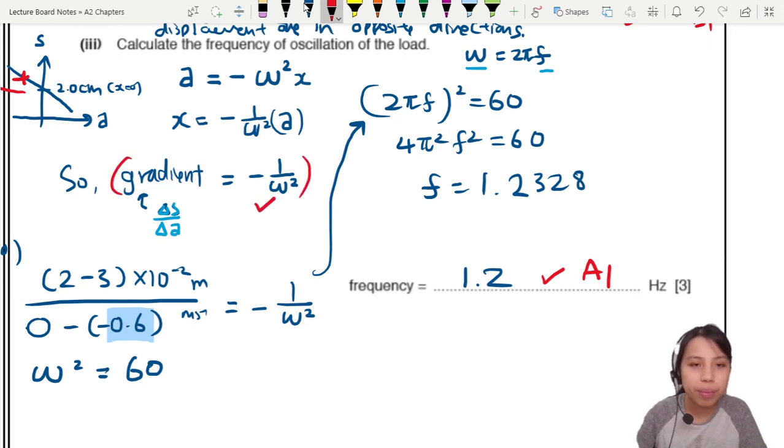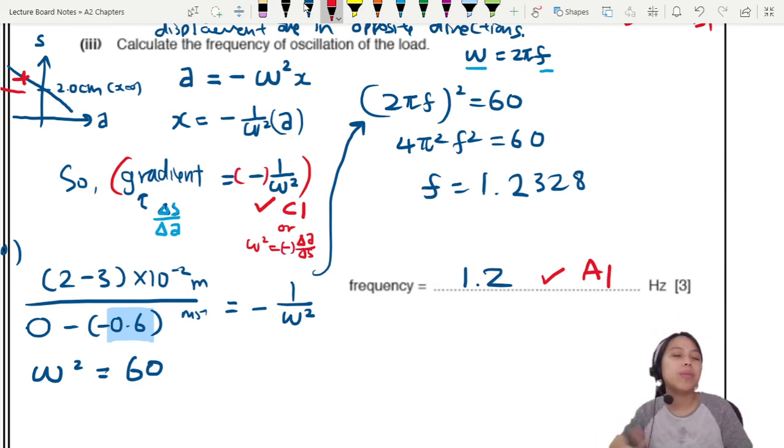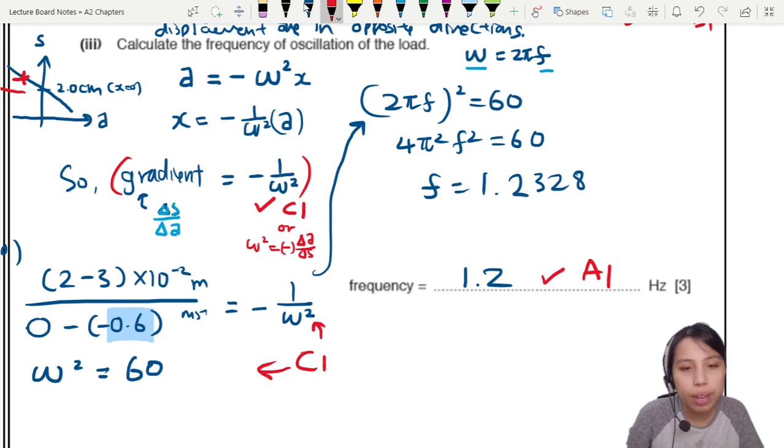1 mark comes from if you knew that the gradient is related to omega. Or if you wrote somewhere that you have omega square equals to delta A over delta S, which is the gradient. If you got negative, okay, if you didn't write negative, it's also okay. They put in bracket means you don't need to write negative, they are generous. Then if you plug in the correct values to get 60, if you show you got 60 or plug in your values, substitute values in correct, and you get final mark. So this is 1, 2, 3 marks.